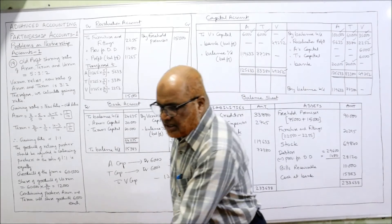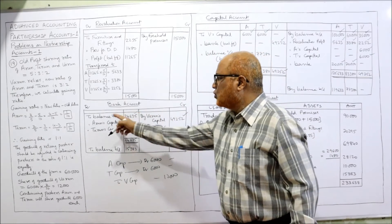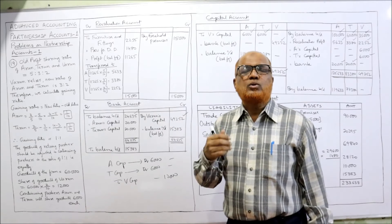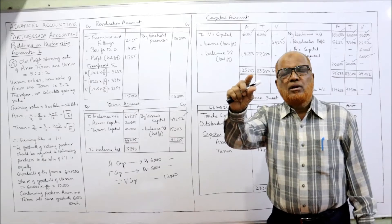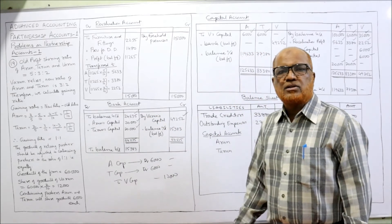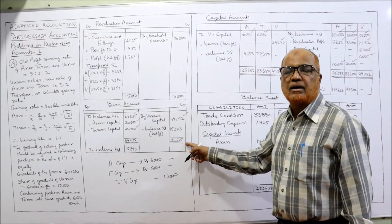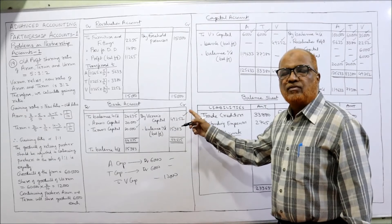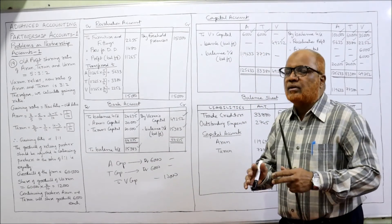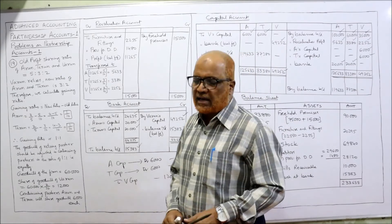For the bank account: opening balance is 24,635 (from the original balance sheet). Continuing partners bring in 20,000 each (Arun and Tarun) — debit bank, credit their capitals. Total debit side = 64,635. Payment made to Varun = 49,252. Closing bank balance = 64,635 minus 49,252 = 15,383. This balance of 15,383 will appear on the asset side of the new balance sheet.